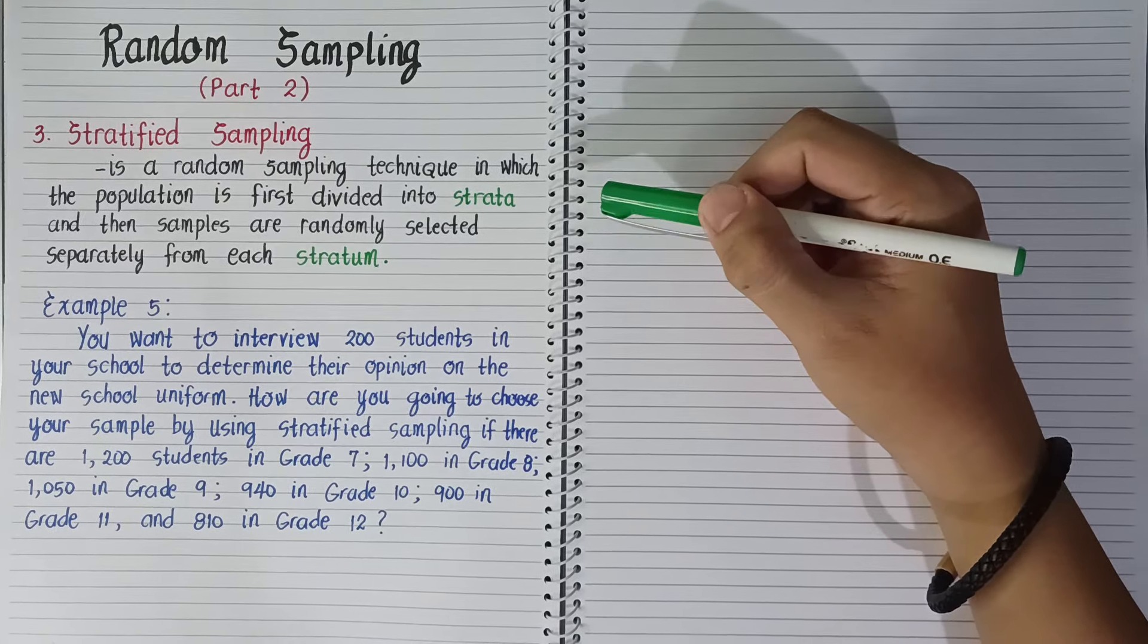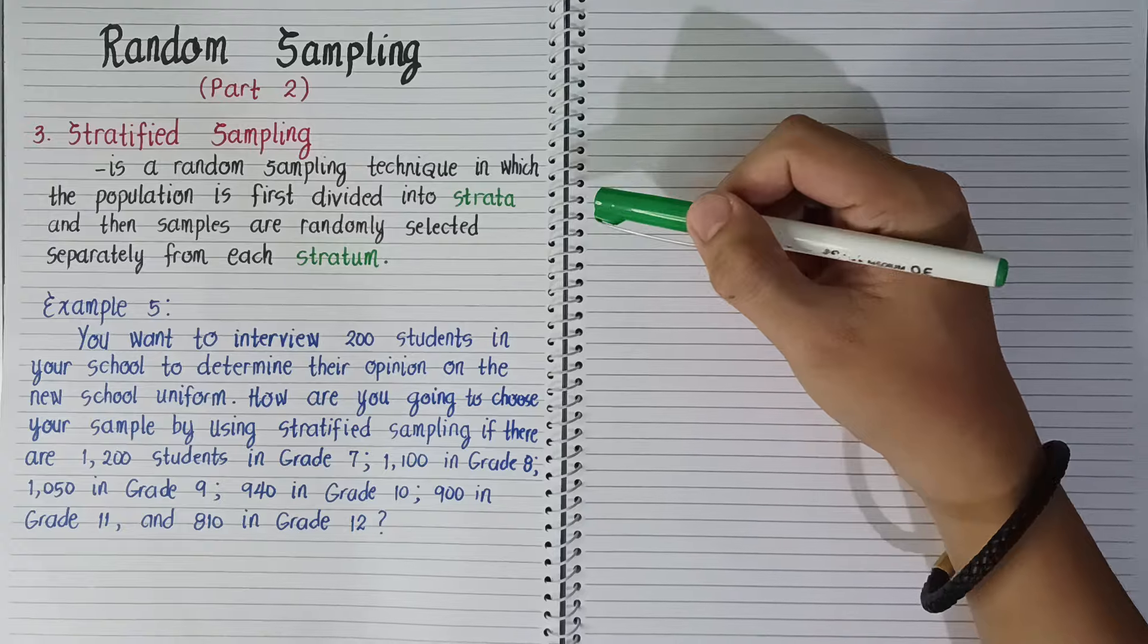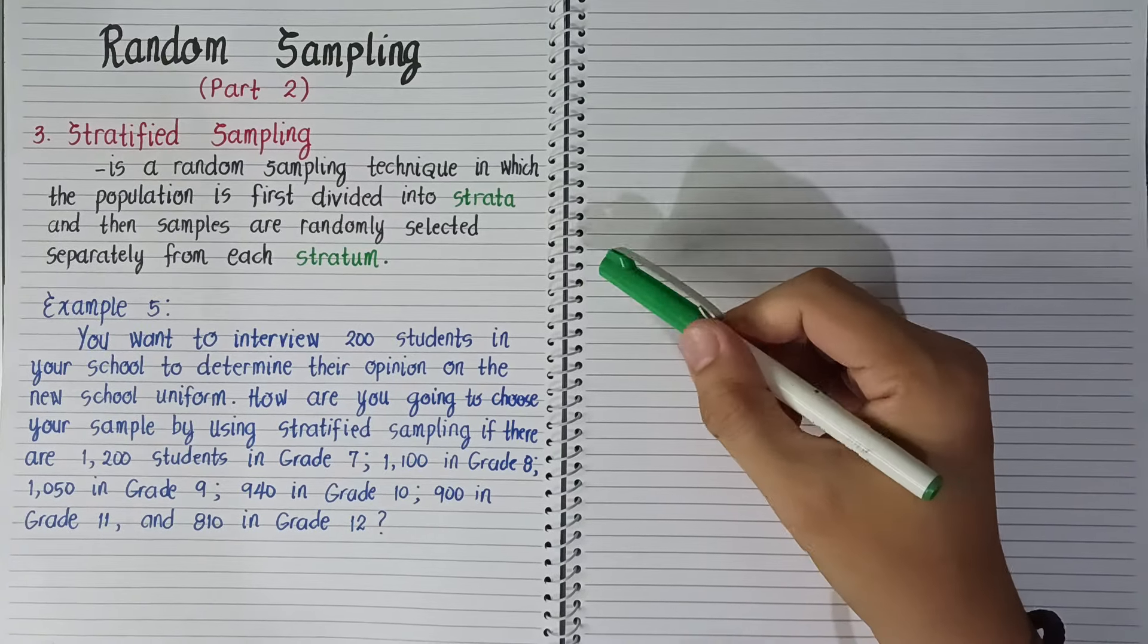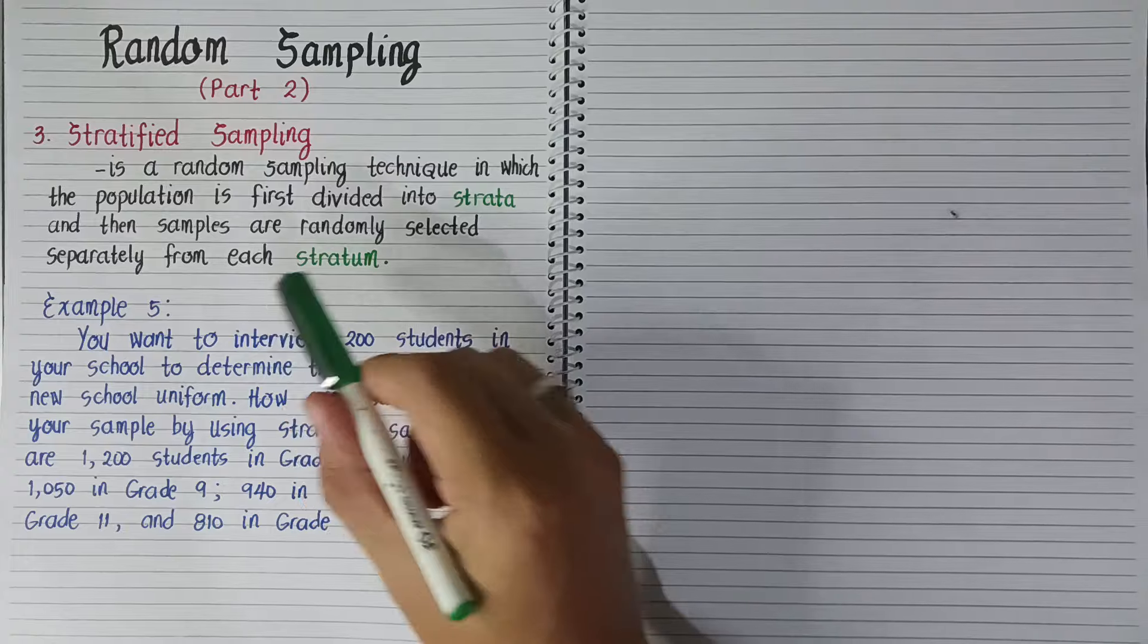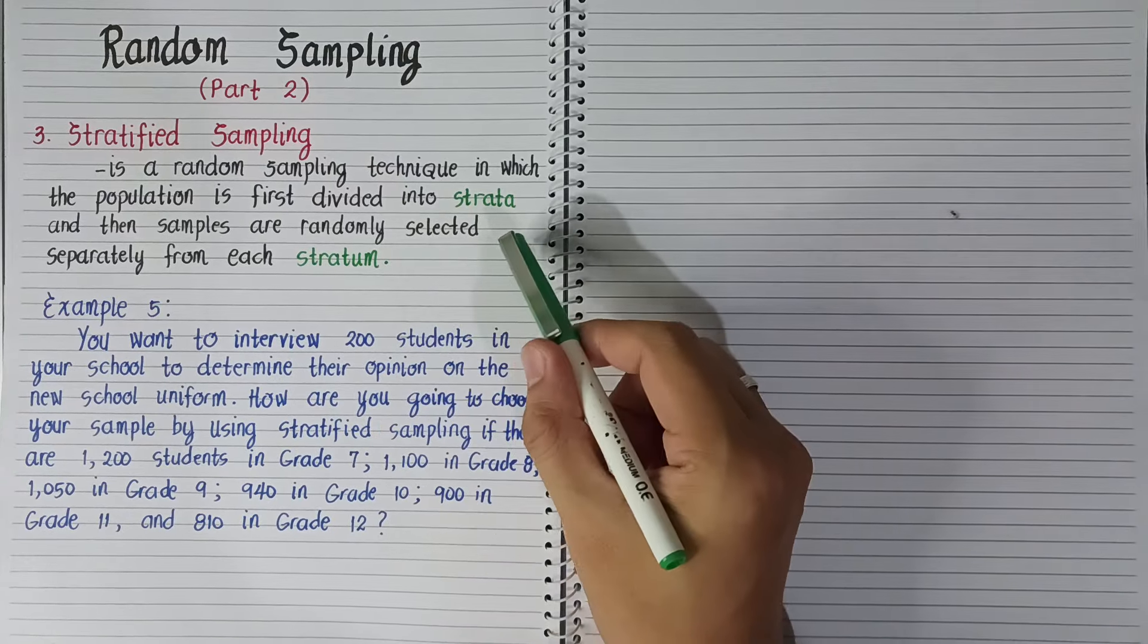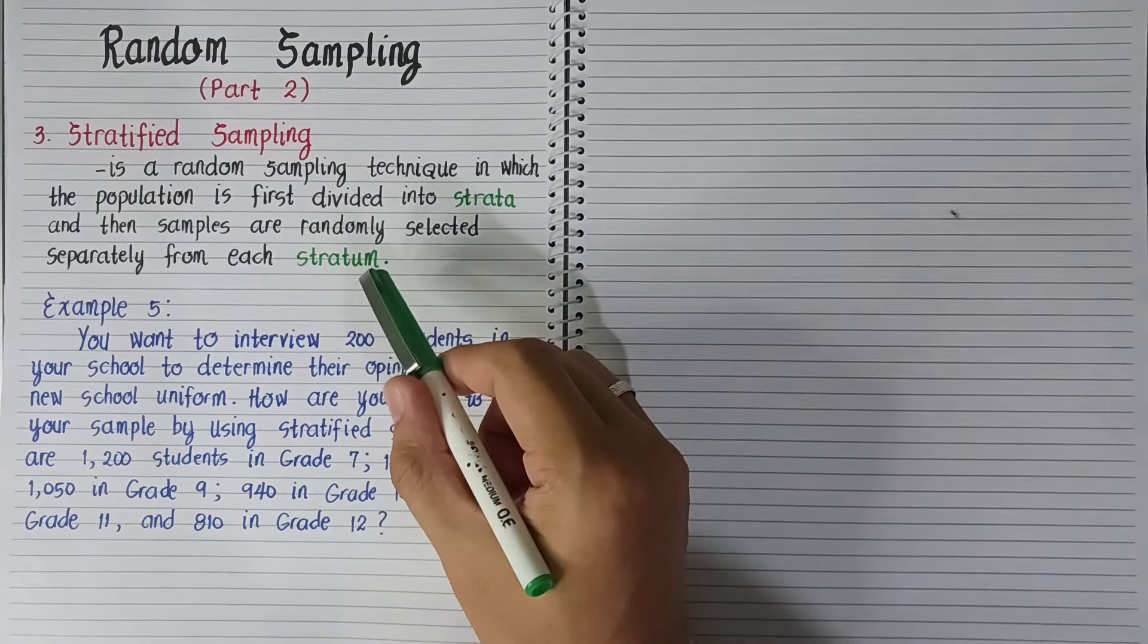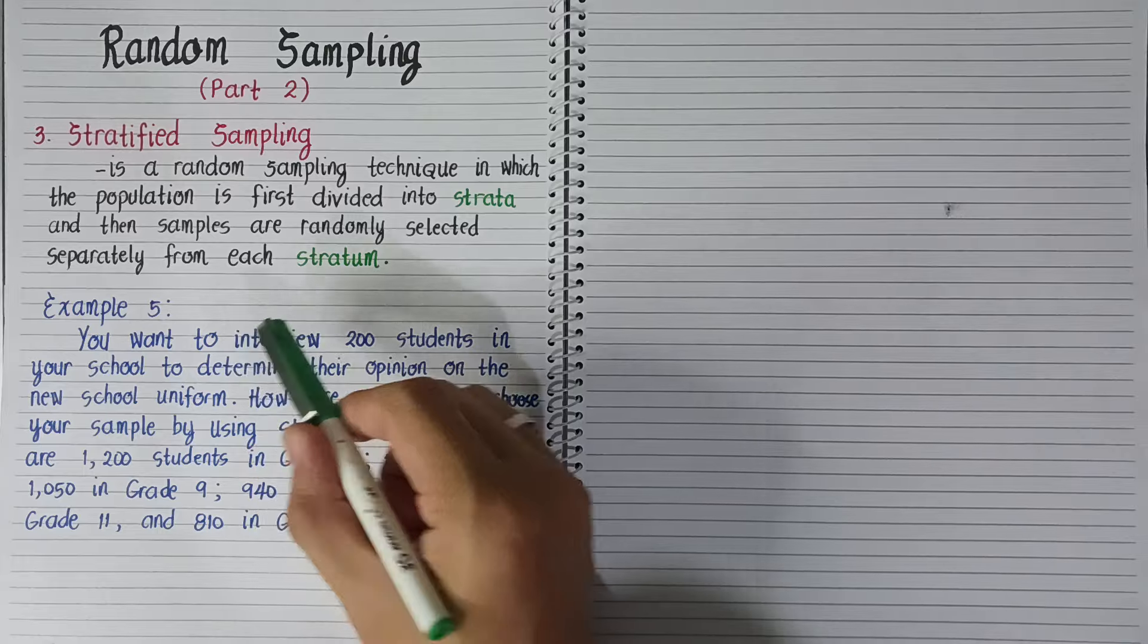Another type of random sampling is stratified sampling. It is a random sampling technique in which the population is first divided into strata and then samples are randomly selected separately from each stratum.